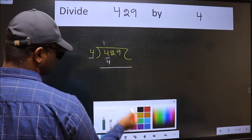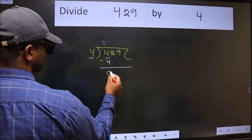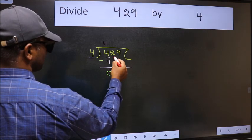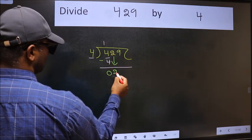Now we should subtract. We get 0. After this, bring down the next number. So 2 comes down.